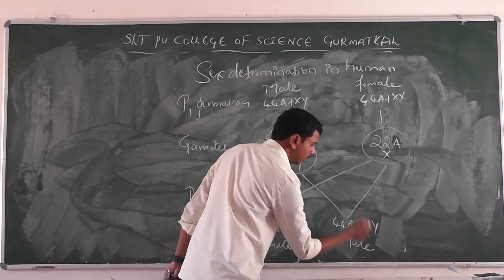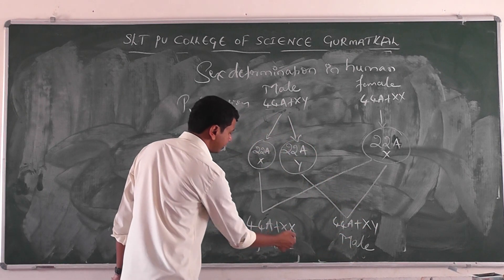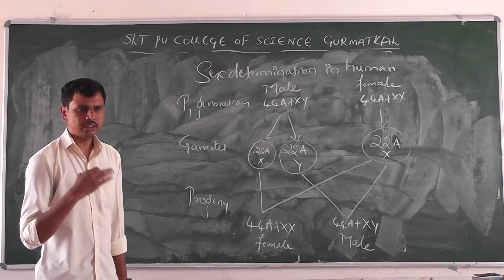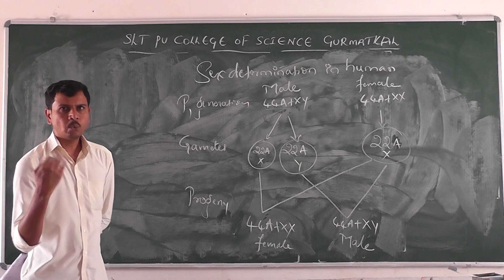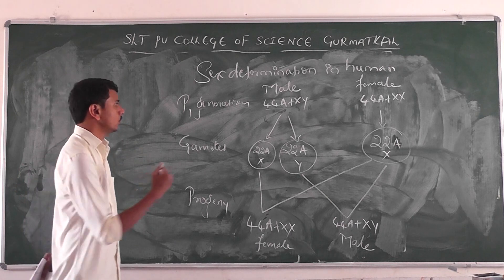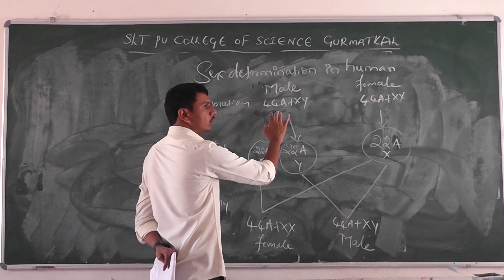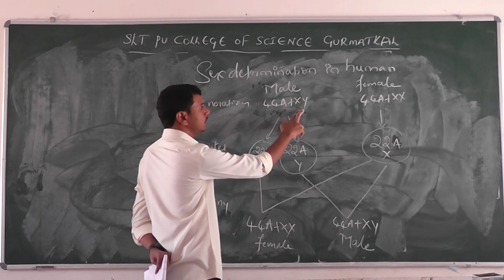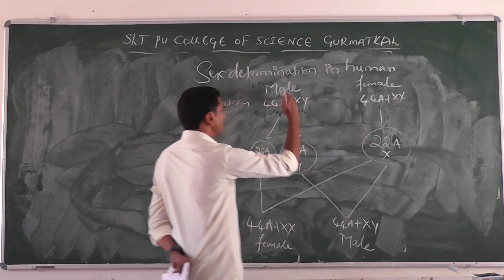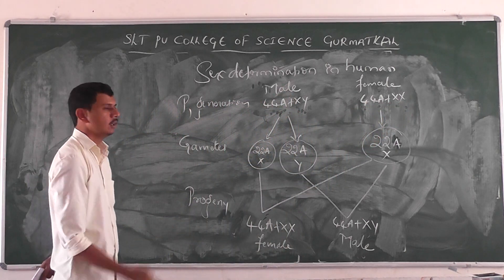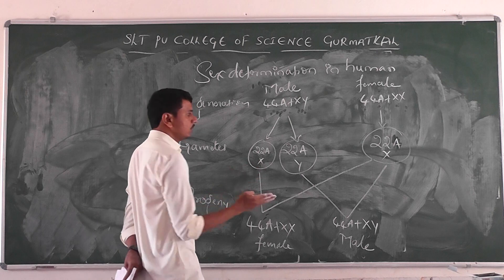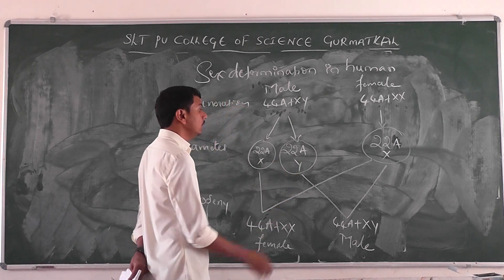So 44 autosomes with XY is the male, and 44 autosomes with XX is the female. This is how the identification of the sex of the baby — sex determination — works, determining which sex is going to be formed. In the case of the male, 44 autosomes along with X and Y; in the case of the female, 44 autosomes along with homogametes XX. When meiosis occurs, half the gametes contain 22 autosomes with X chromosome and the remaining half contain 22 autosomes with Y chromosome.